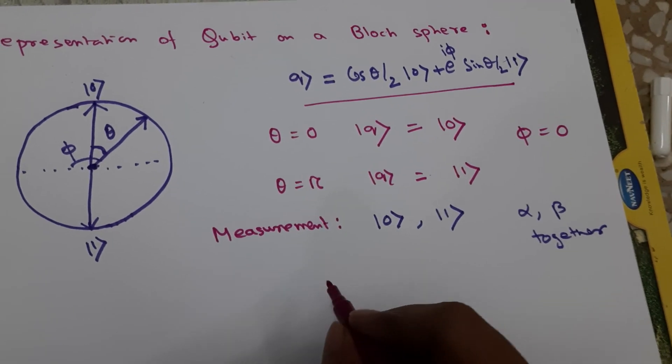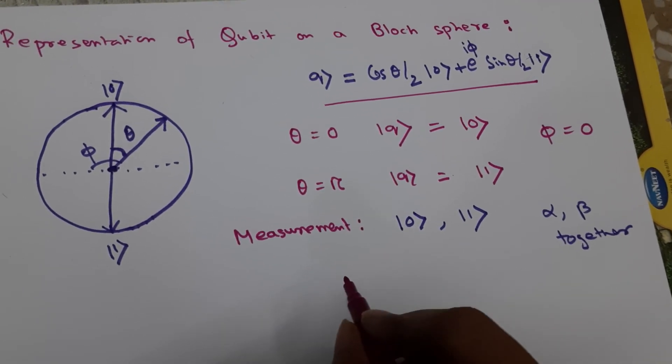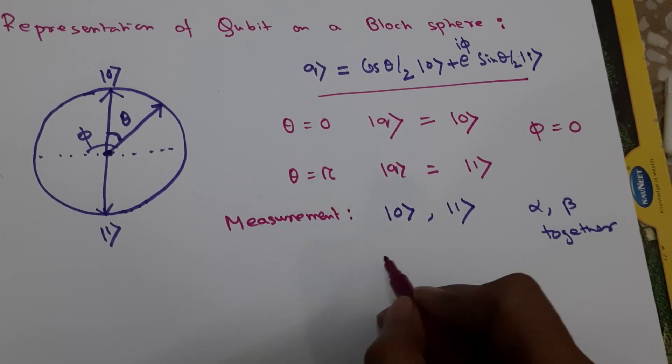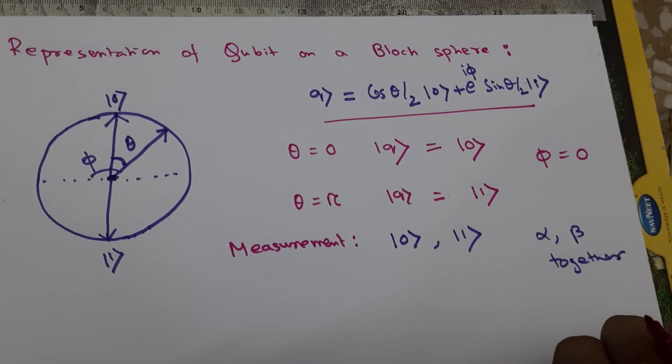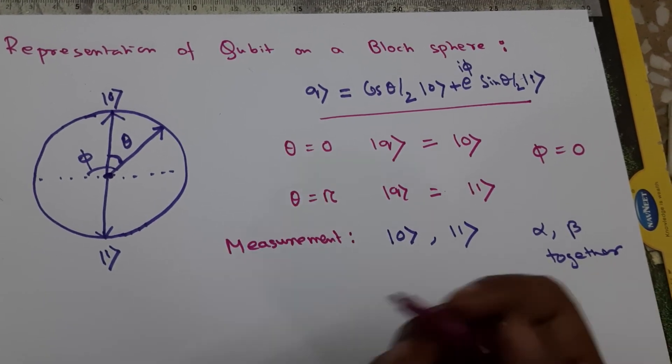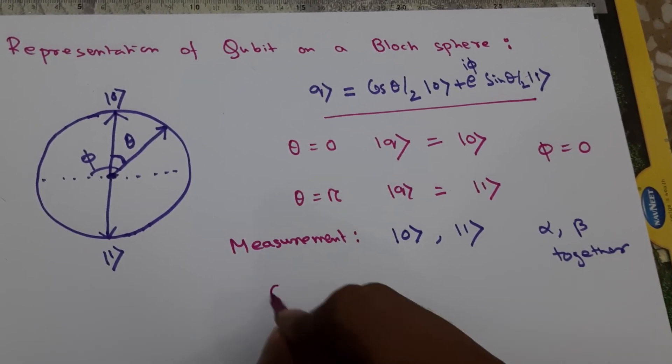We can never know alpha and beta together. Nature always plays a trick on us. Before measurement, the state is evolving continuously—it's like a closed quantum system.